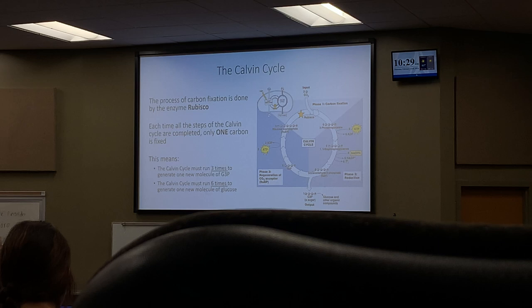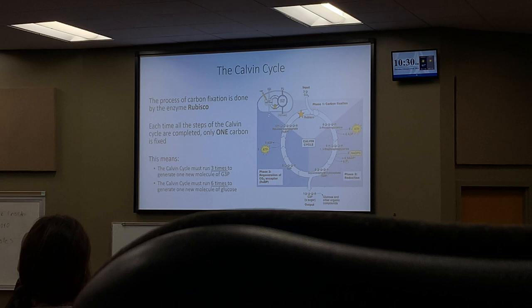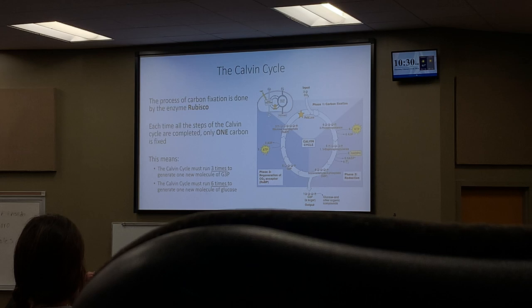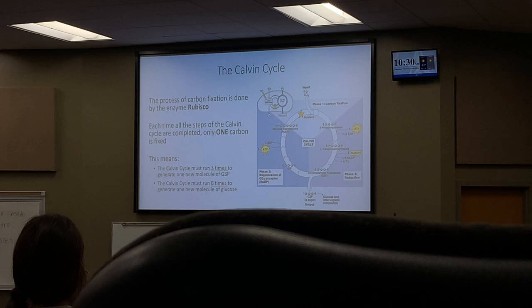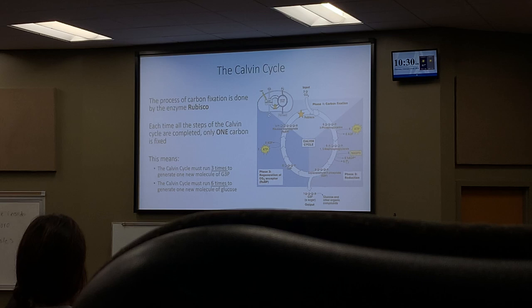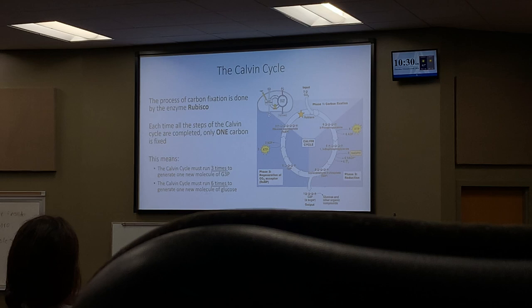Rubisco performs carbon fixation by attaching carbon dioxide onto RuBP. You can see RuBP as an input, and as the cycle runs, RuBP is regenerated. RuBP is both a reactant and a product of the Calvin cycle — that's what makes it a cycle. As long as you keep supplying rubisco, carbon dioxide, NADPH, and ATP, the cycle continues.